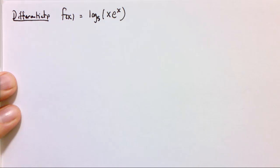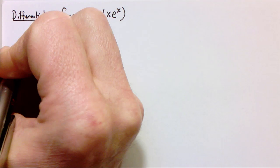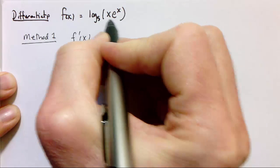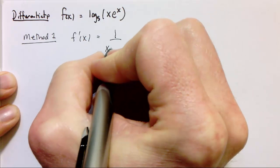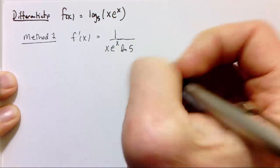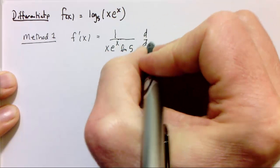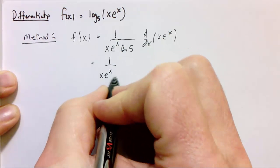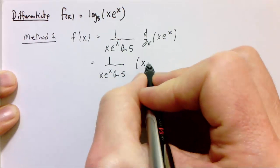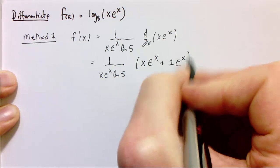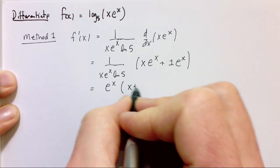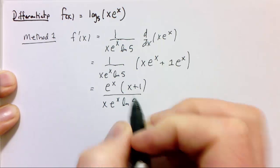Here's another chain rule example, and there are two or three different ways to approach it. Starting with the straightforward chain rule: the derivative of log base a of some stuff is 1 over that stuff times the natural log of the base times the derivative of the inside. I can use the product rule to get that inside derivative. Cleaning up, I can factor e to the x out of both terms to get e to the x times (x plus 1), and the e to the x terms cancel.